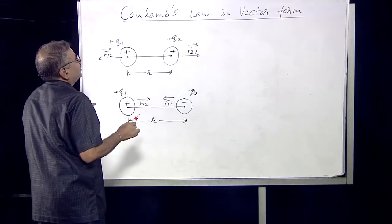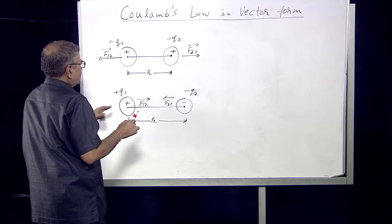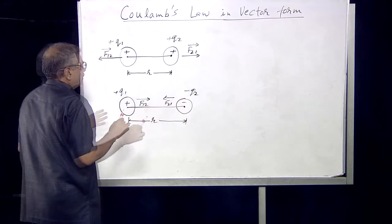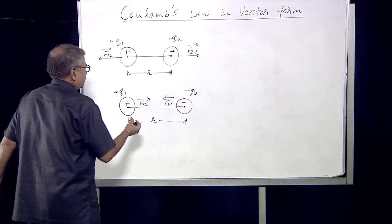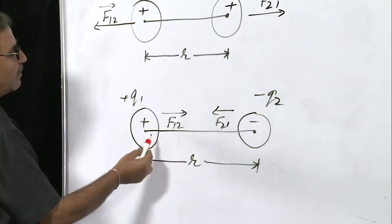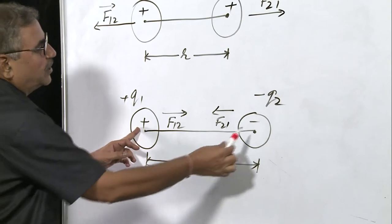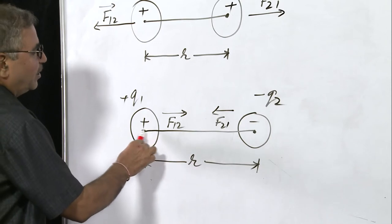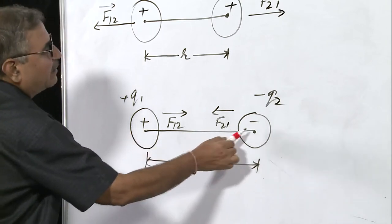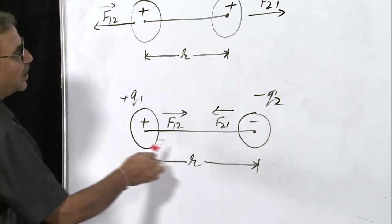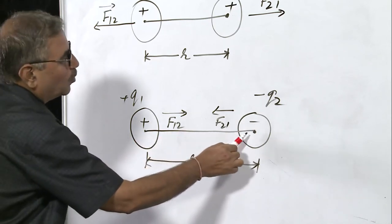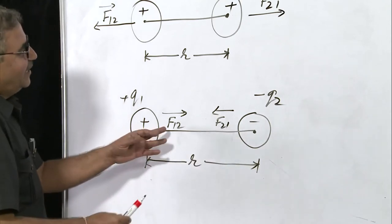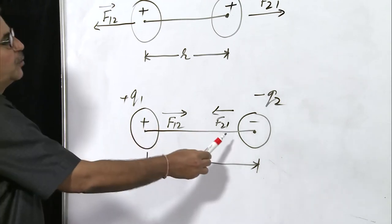If one of the charges is negative — meaning Q1 is positive and Q2 is negative — then the forces become attractive. F12 will now be directed from left to right, as the positive charge attracts the negative charge. And the force on Q2 due to Q1 will be from right to left. Again, F12 and F21 are oppositely directed.